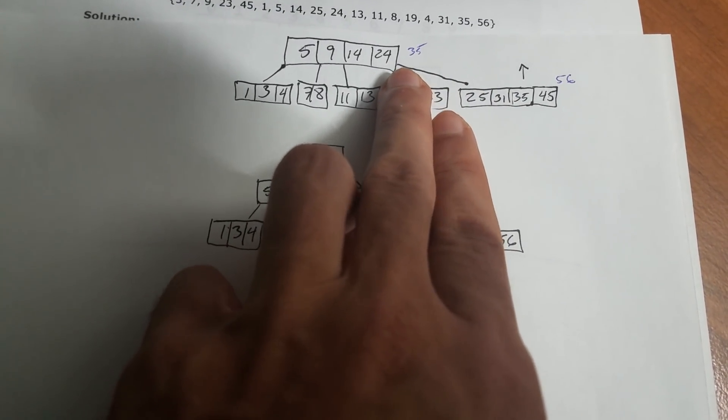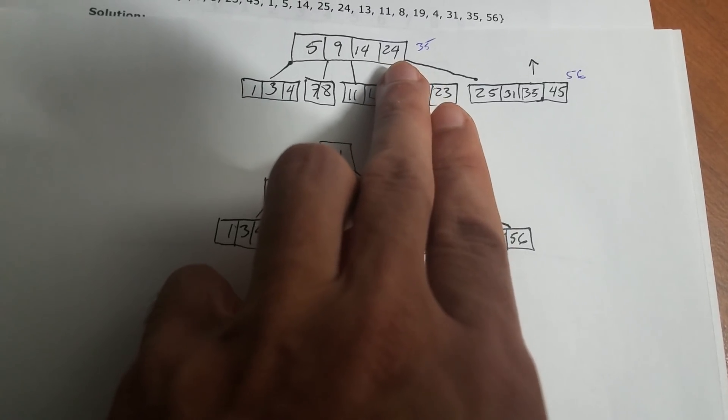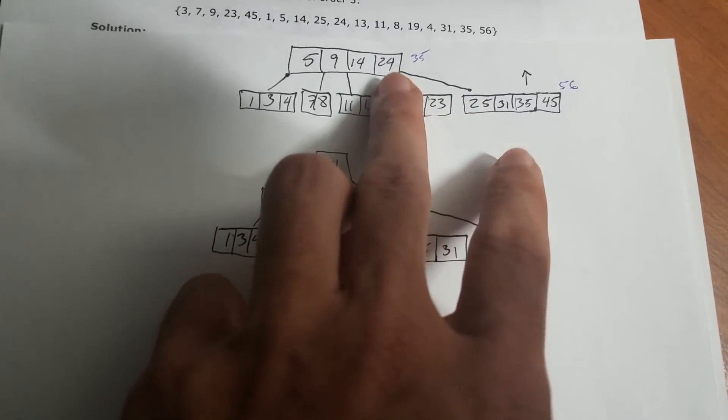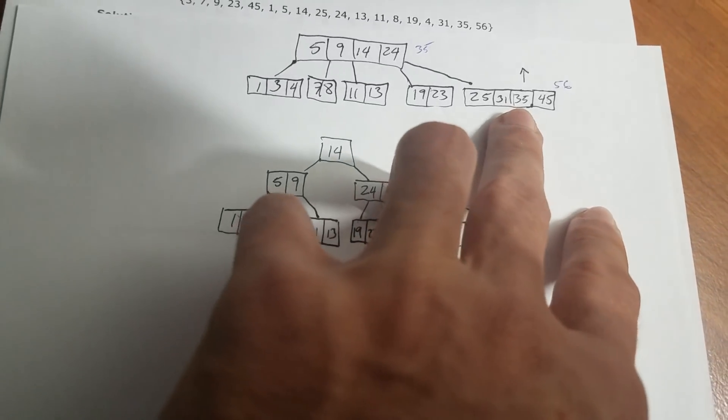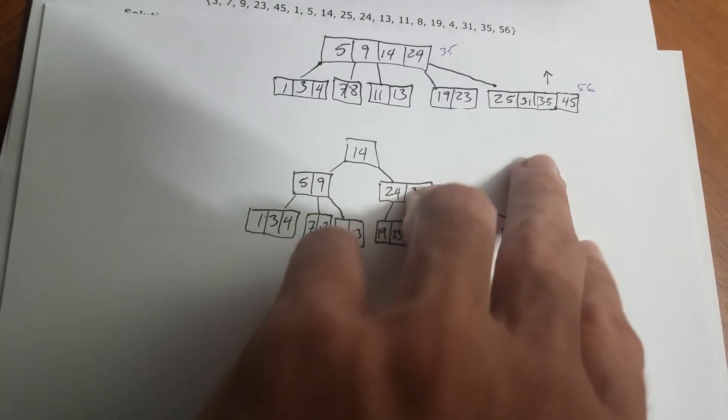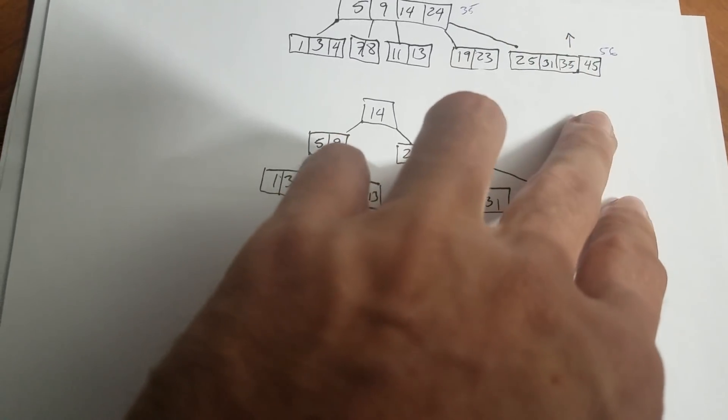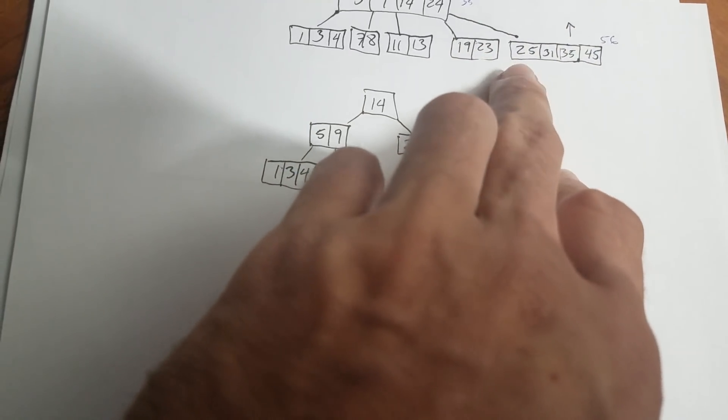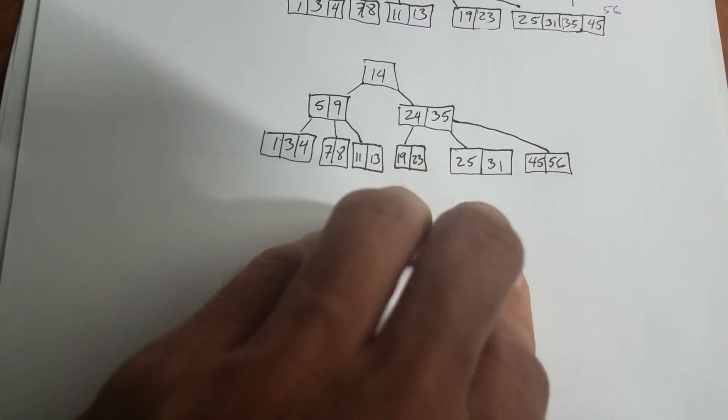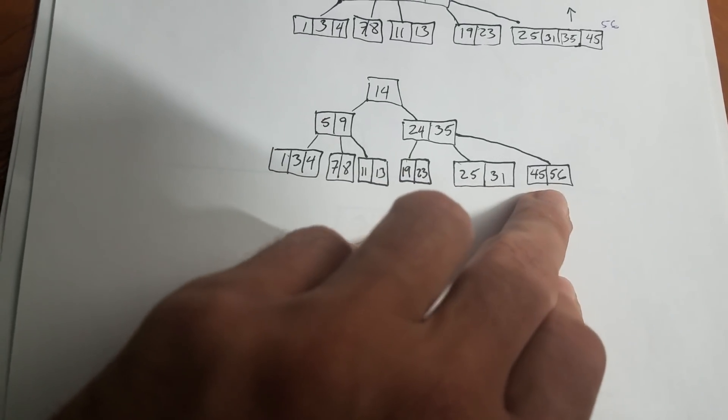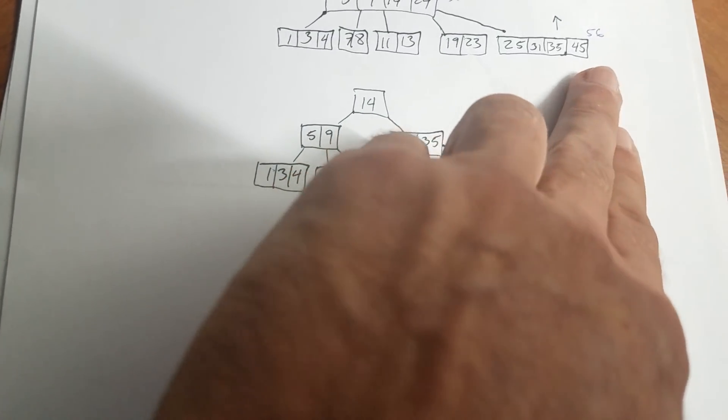But remember, we can only have four in the node. In this case, these are roots. So we're going to have more than four. But for now, let's put it this way. 35 gets promoted, we get rid of it, right? So we split into 25, 31 and 45 and 56.